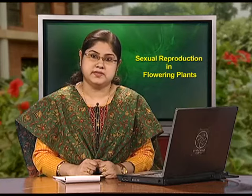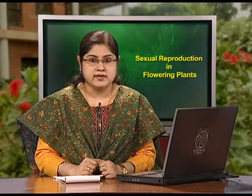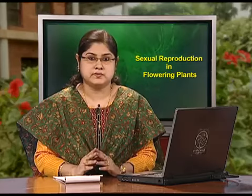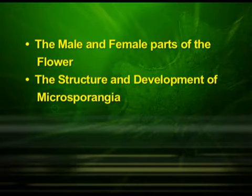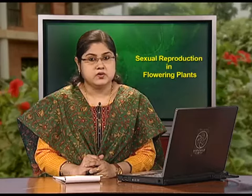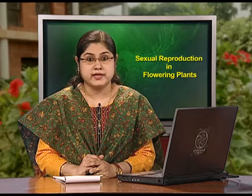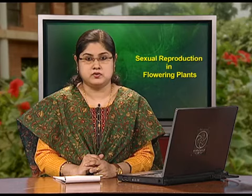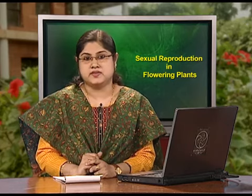In the first part of this chapter, we have already discussed the flower as a reproductive structure of angiosperms, the male and female parts of the flower, the structure and development of microsporangia and the pollen grain, which represent the male reproductive part of the flower. We closed the first episode with some points to think about. Let us discuss them first.